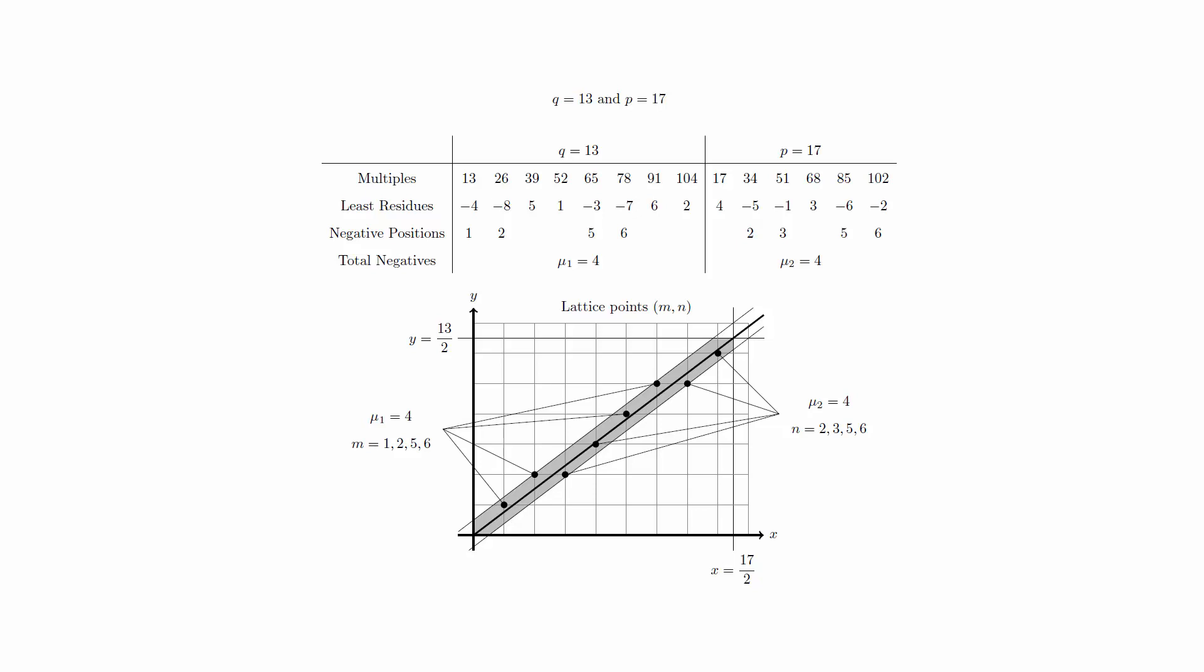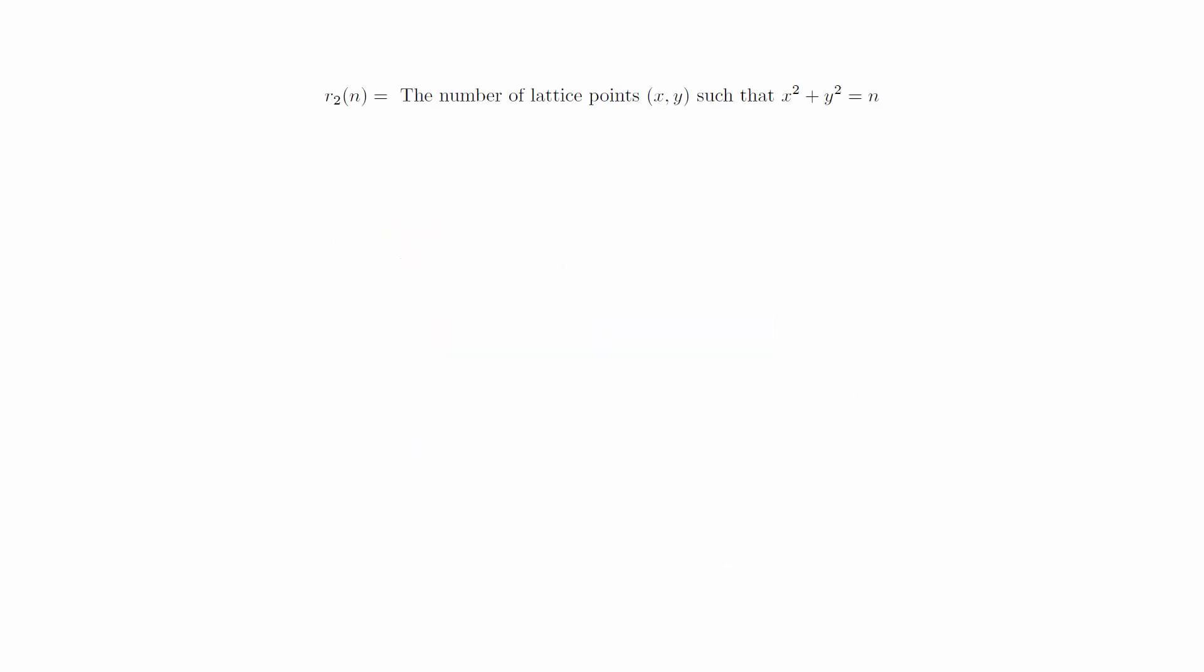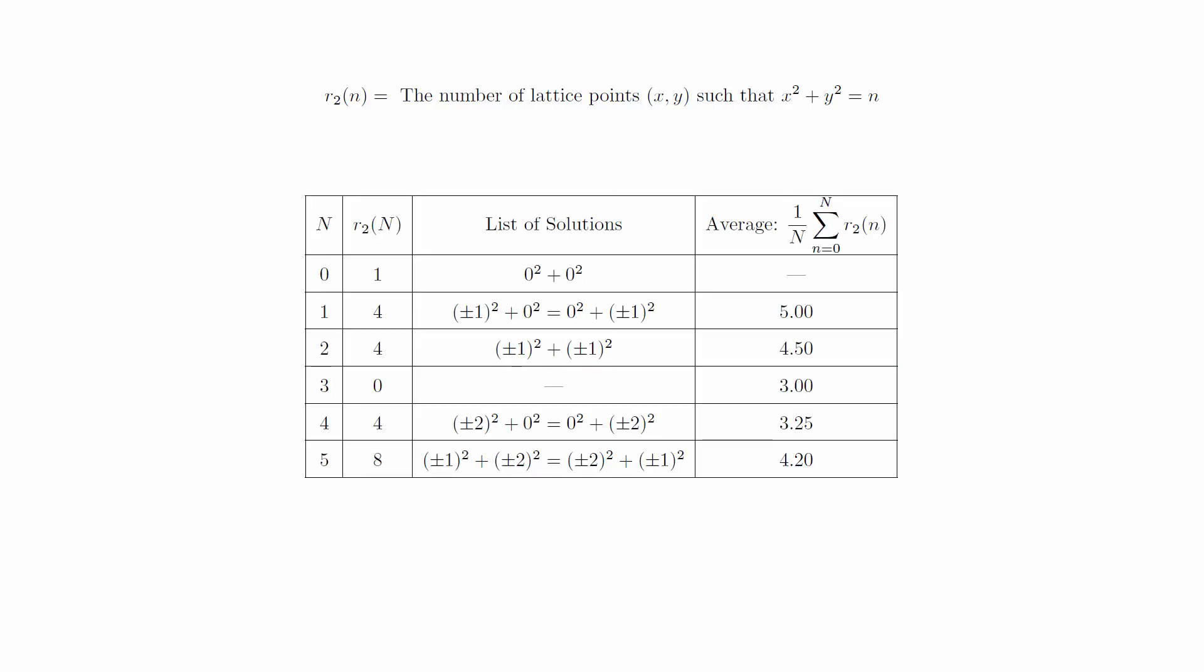Let's formalize this. We let r_2(n) be the number of ways to write the natural number n as the sum of two square integers. Here's a chart that has the first few values.